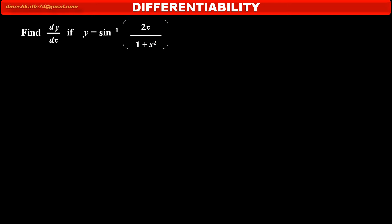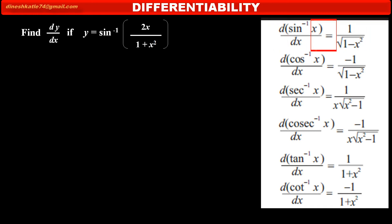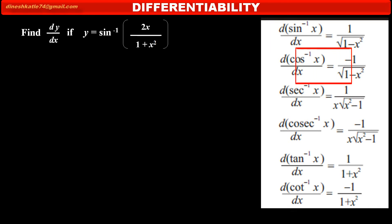To find the derivative of inverse functions, first we have to learn the formulae. The first one is: derivative of sin inverse x is equal to 1 upon under square root 1 minus x square. The second one is: derivative of cos inverse x is equal to minus 1 upon under square root 1 minus x square.